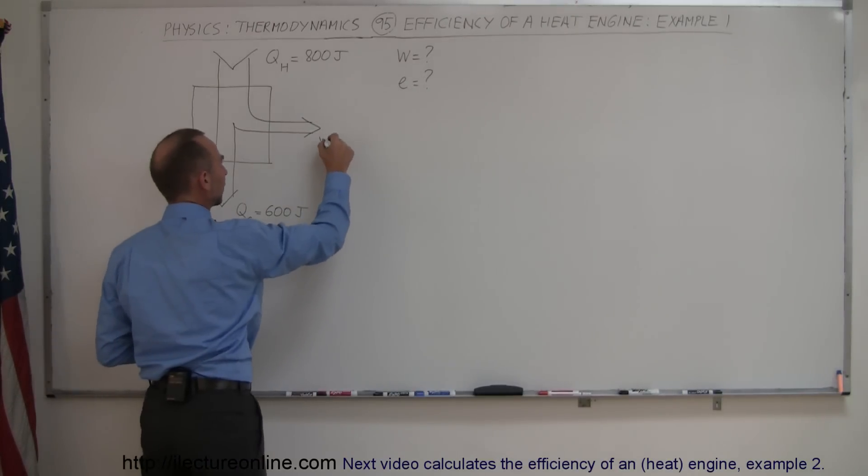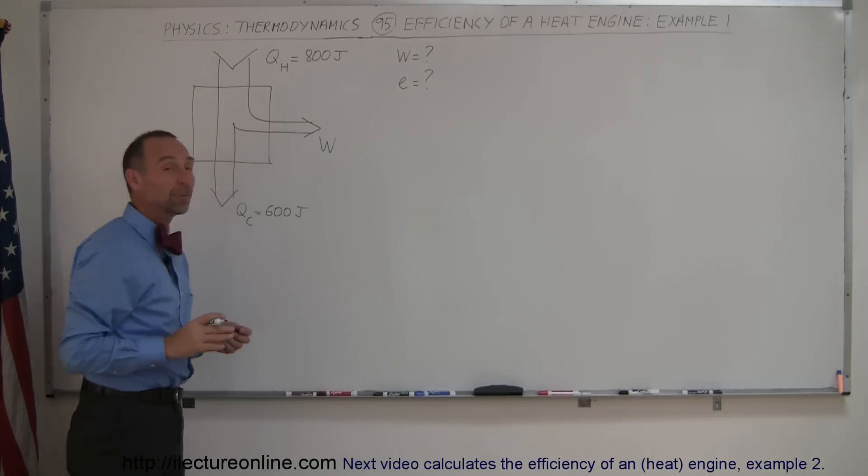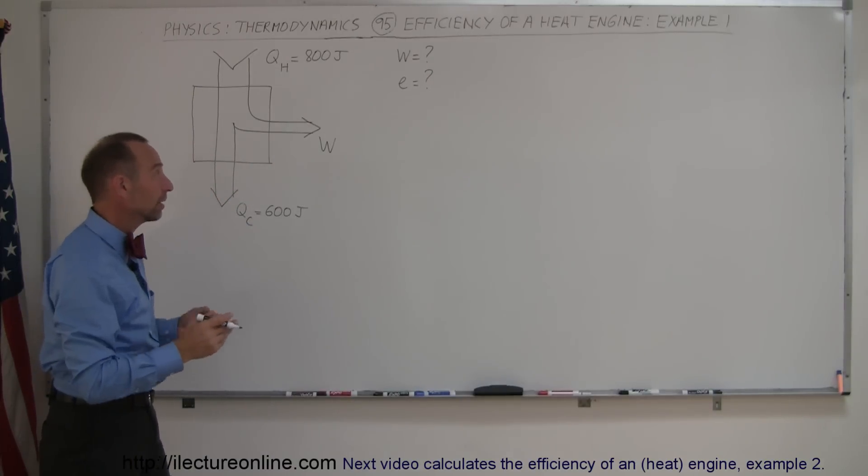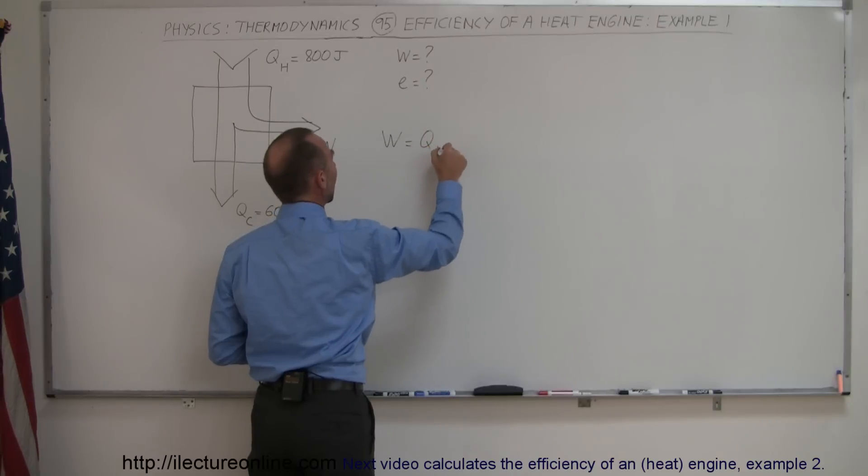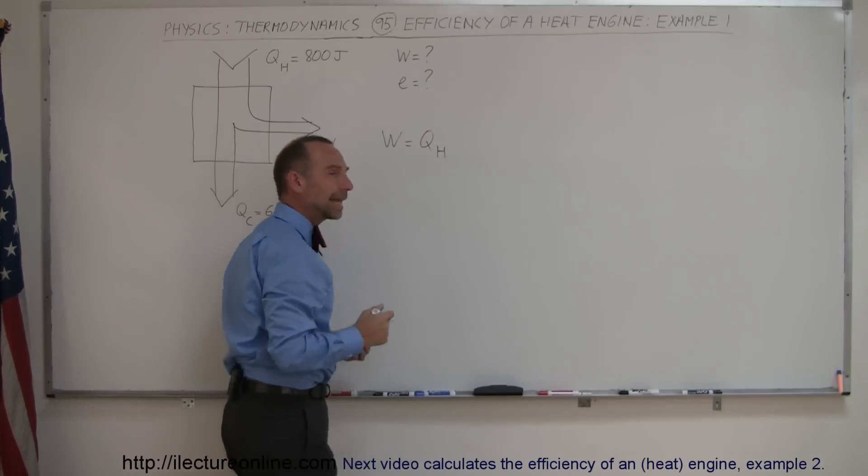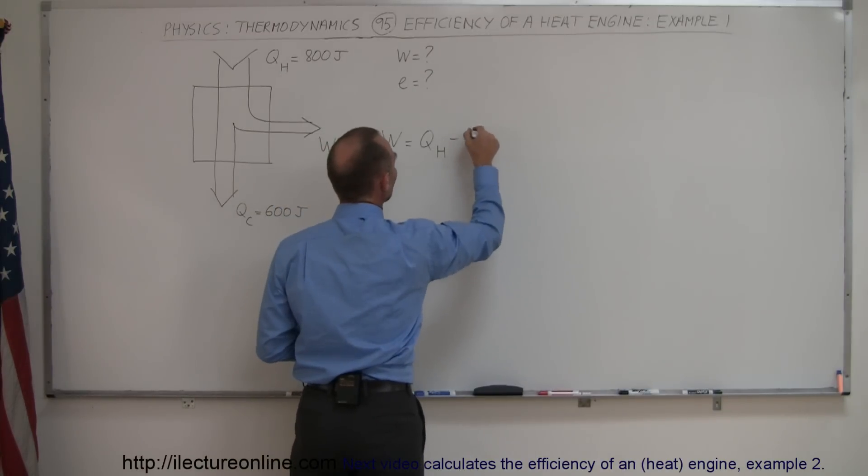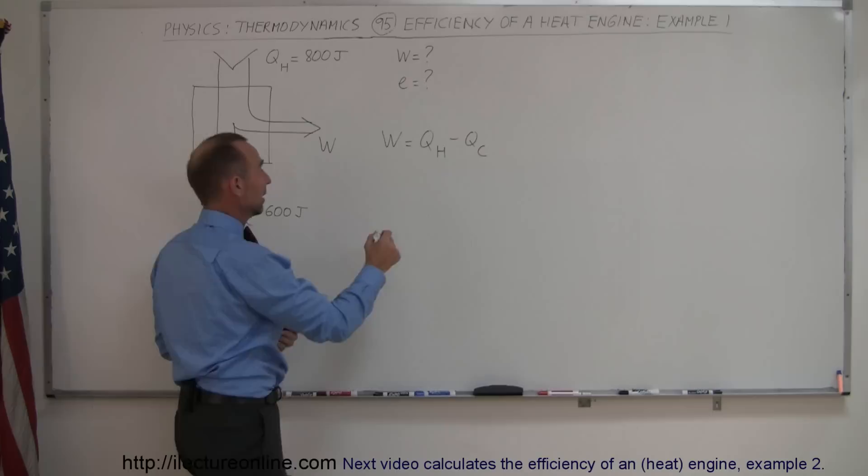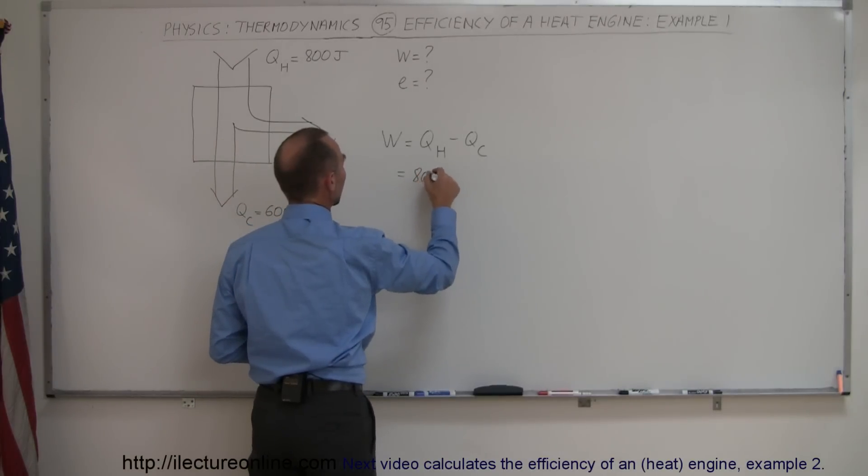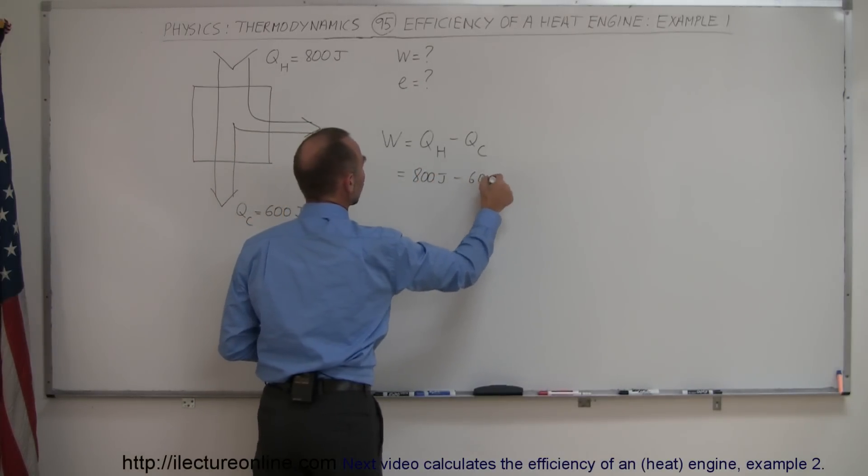And of course, we do a certain amount of work. So the question is, how much work is done in this case? Well, the definition is that the work is simply equal to the difference between the heat taken in from the hot reservoir minus the heat being exhausted at the cold reservoir. So in this case, that is equal to 800 joules minus 600 joules, and so we do 200 joules of work.